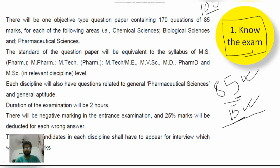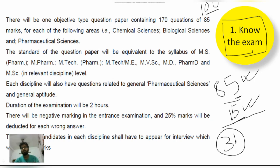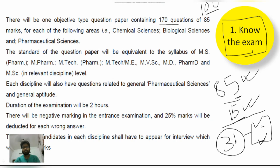Your total rank is determined by combining your written exam and interview scores. In my case, last year my all-India rank in PhD Pharmaceutics was 31. That rank came from my written exam performance plus my interview performance combined. There are a total of 170 questions in the exam.